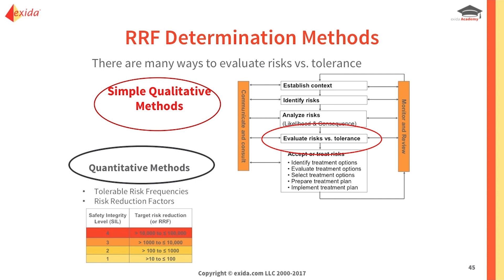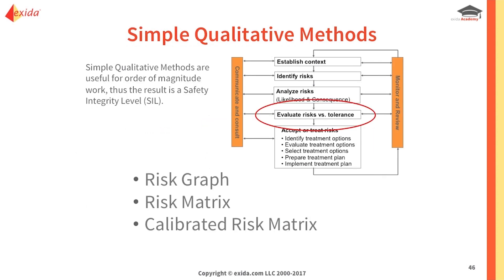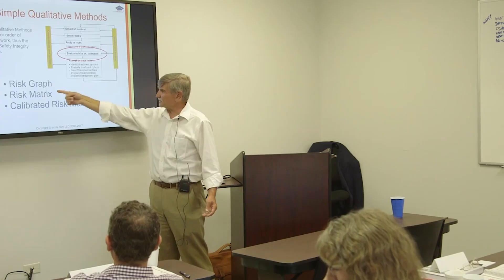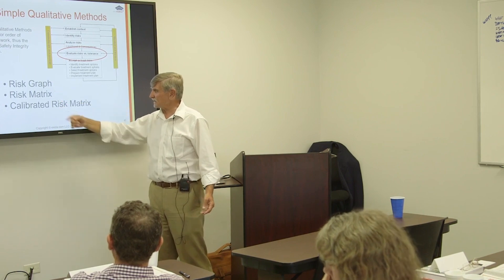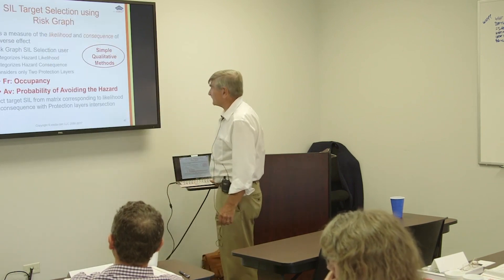Simple methods are often and commonly used first. We sit down and evaluate all the potential risks and compare them to the tolerances. There are three fundamental methods which are almost the same thing: risk graphs, risk matrix, and calibrated risk matrix.